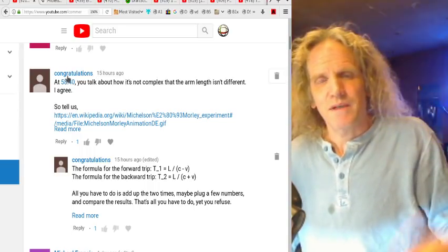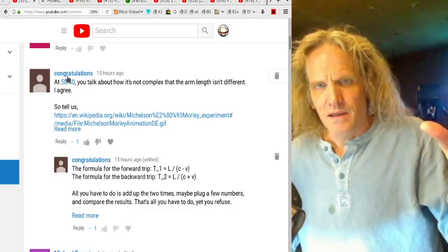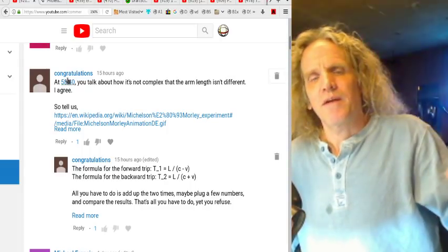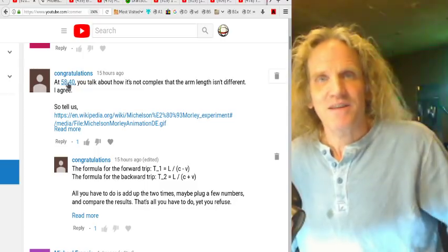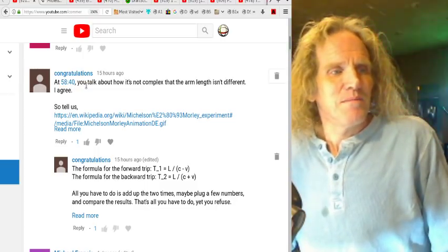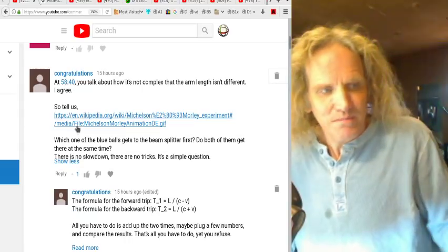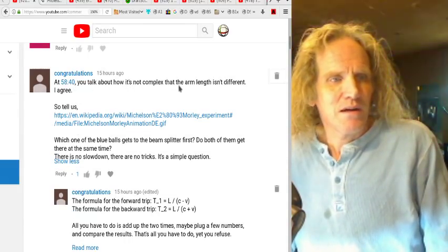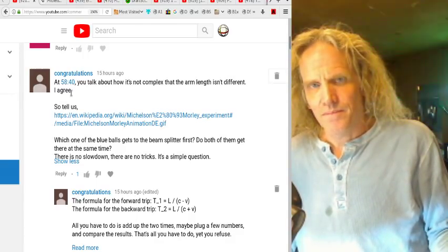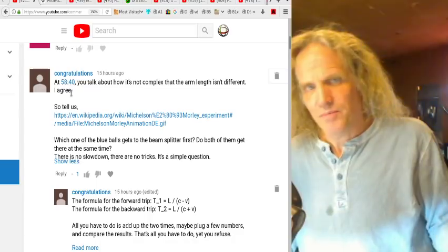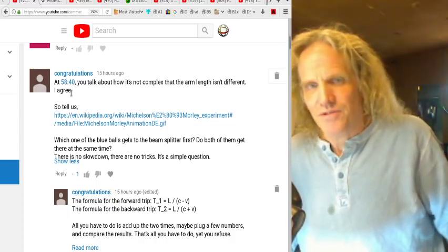And he's just not understanding that because they post something on a Wikipedia page and they have a formula, it doesn't mean their formula is about reality. Their formula is about what they think reality is. It doesn't have anything to do with a fact necessarily. I would certainly say in this case it has nothing to do with facts, certainly nothing to do with facts that have any evidence supporting them. So he says you talk about how it's not complex, that the arm length isn't different. I agree. Well, if you agree that the length is the same, and then what? You're disagreeing that the speed of light isn't the same? And that's where I'm just going to say, that's your problem.